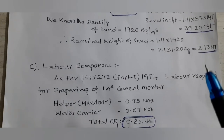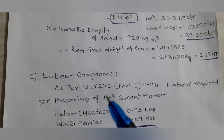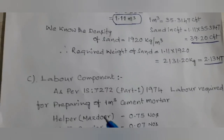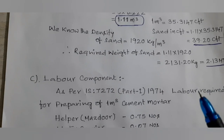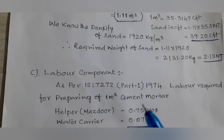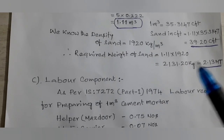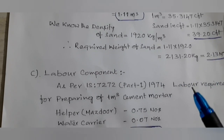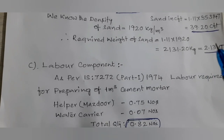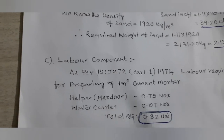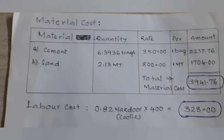Now for the labor component, as per IS code 7272 Part 1, 1974, labor required for preparing 1 cubic meter of cement mortar is: helper 0.75 numbers and water carrier — for carrying water and mixing — 0.07 numbers. Total labor equals 0.82 numbers of workers required only for the mixing and preparation effort.